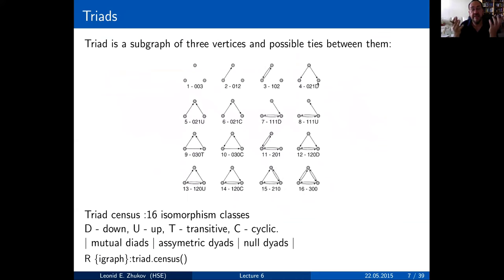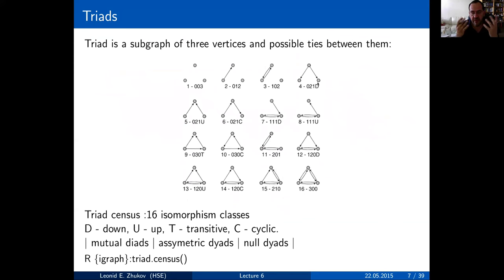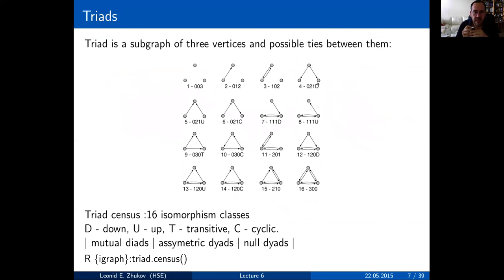We can extend this definition to triads — three nodes. From a sociological point of view, the triangle is a very important figure. If a person has two friends, there's a high probability that those two friends know each other. So there are a lot of triangles in social networks.